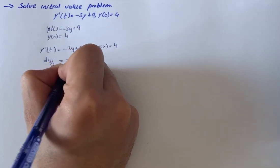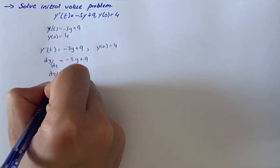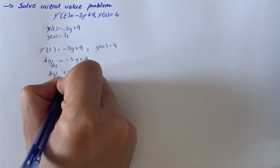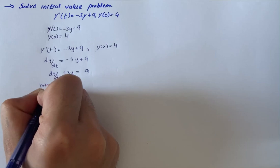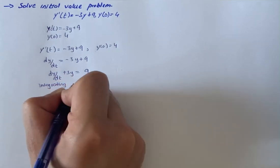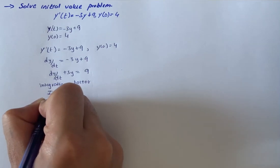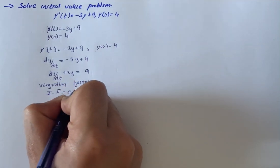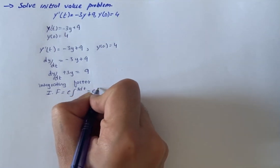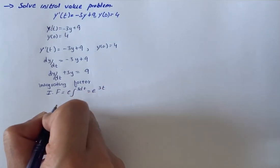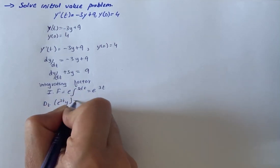So we have dy/dt plus 3y equals 9. Now for the integrating factor, we have IF equals e raised to the power of the integral of 3 dt, which equals e raised to the power 3t. So we have d/dt of e raised to power 3t times y equals 9 e raised to power 3t.